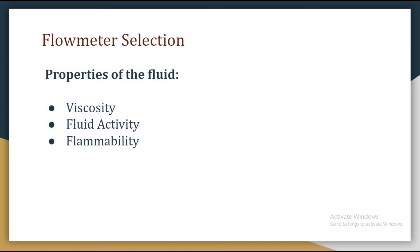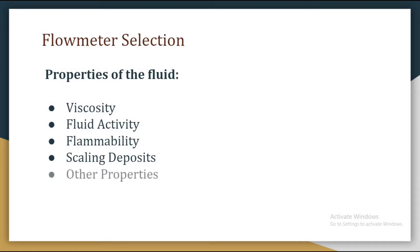We need to keep fluid reactivity in mind. We also need to be familiar with flammability — fluids which are inflammable require flow meters like the vortex flow meter, which are suitable for application in hazardous areas. Special care should be taken for fluids having a tendency to deposit scales, since scaling can block pressure lines and ducts. Other properties like compressibility, abrasiveness, transparency, electrical conductivity, magnetic properties, and lubricity should also be considered while selecting a flow meter.